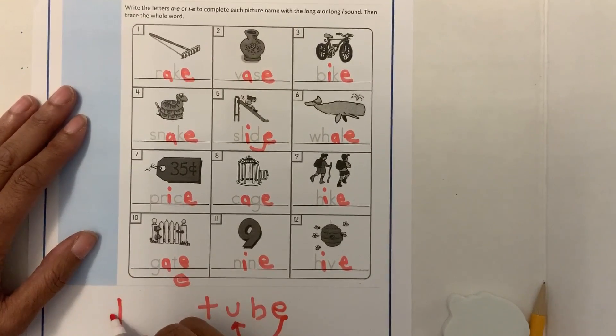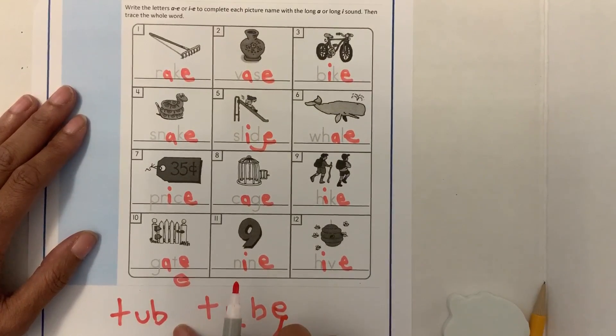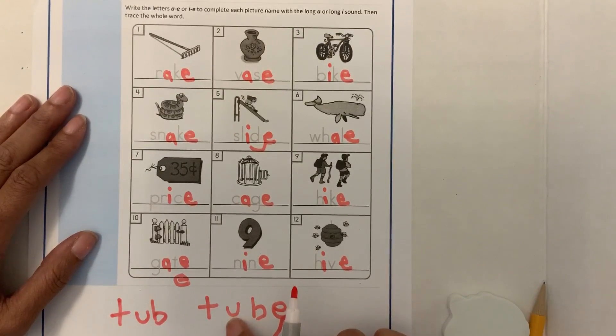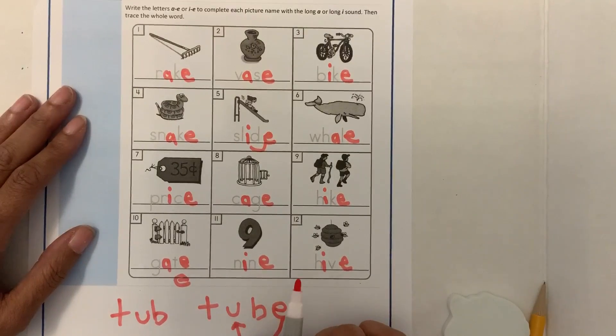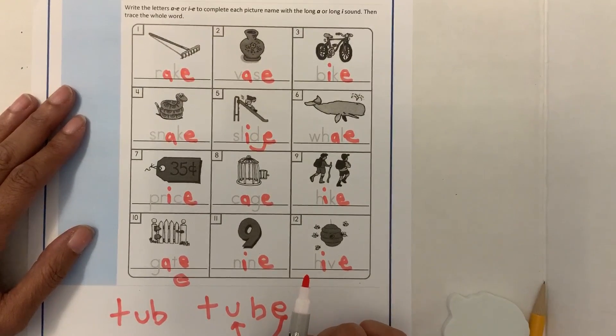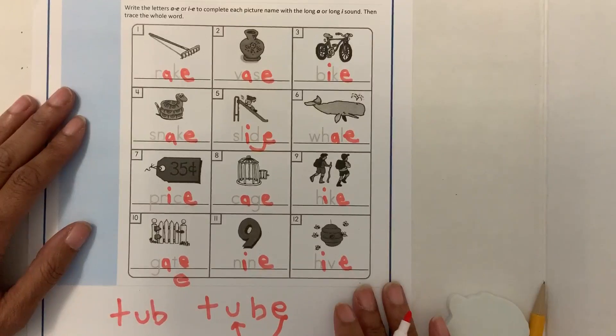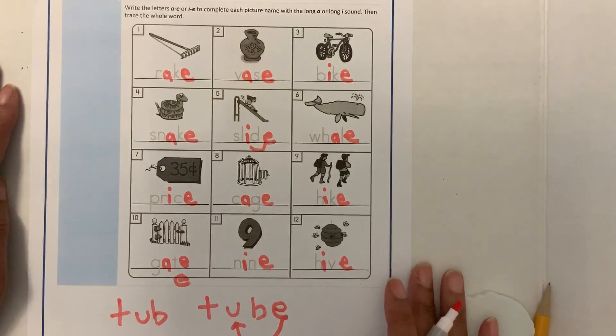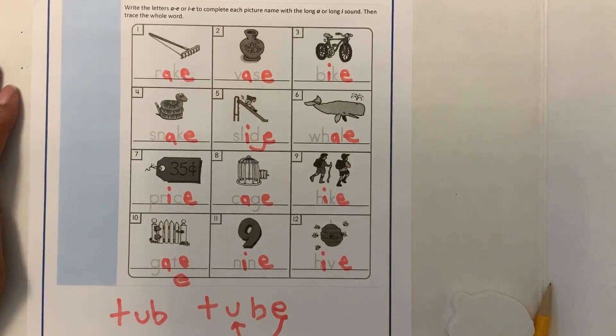Tube. This is tub, T-U-B. This is tube, T-U-B-E. So the silent E is the magic E that changes the vowels from their short sound to the long sound. And the long sound is just saying its name. So this is what your paper should look like. And I will see you in the next video.